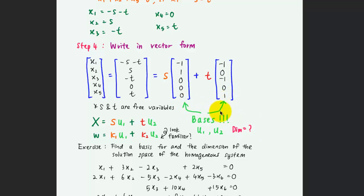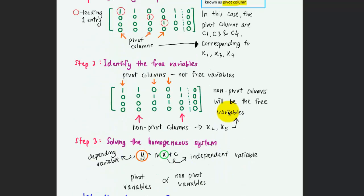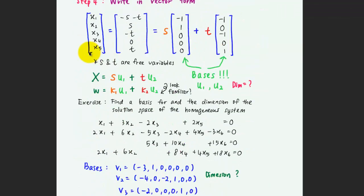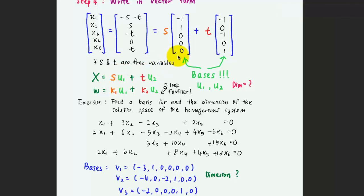Since we have two bases for this system of linear equations, the system has two dimensions. To summarize, the column vector x (from x1 to x5) equals s times u1 plus t times u2, where s and t are scalar parameters and u1, u2 are the bases. This looks familiar from the previous lesson where a vector is expressed as k1 times u1 plus k2 times u2.